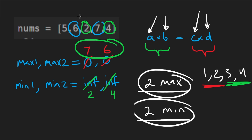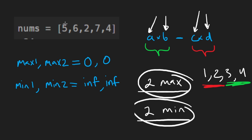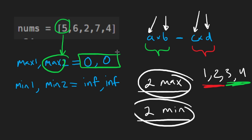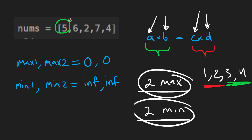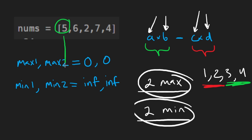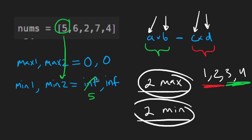In terms of implementation, at a high level: for each number, I'll ask — is this number larger than max2? If yes, is it also larger than max1? If so, I put that number in max1 and move the old max1 value to max2. Otherwise, I can only replace max2. Inversely, I do the same with minimums: if a number is smaller than min2, I ask — is it also smaller than min1? If yes, I put it in min1 and move old min1 to min2. Otherwise, I just replace min2.